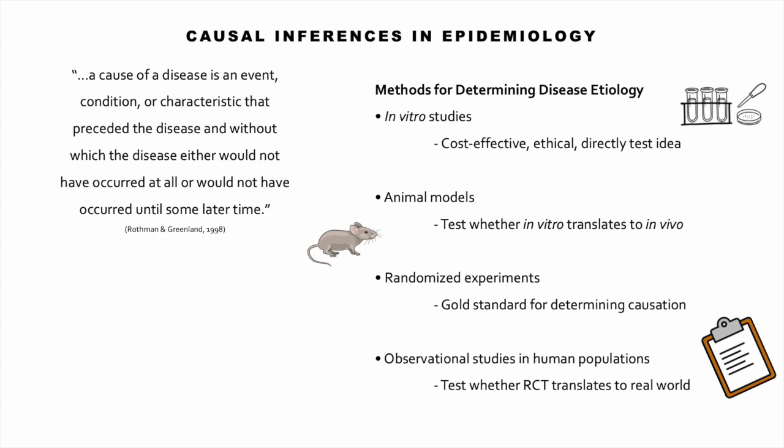Randomized controlled trials are the gold standard for determining causal relationships, along with prospective cohort studies, but sometimes it isn't ethical to randomize humans to treatment groups, so in some cases we go directly to observational studies in human populations. If an RCT finds the same relationship found in the animal model, the next step is to conduct an observational study to see if that holds true in the real world. It's usually necessary to use a stepwise incremental approach because just because something works in a petri dish doesn't mean it works in a mouse, and just because something works in a mouse doesn't mean it will work in a human.